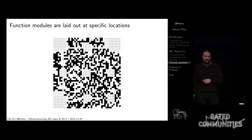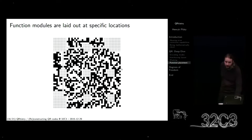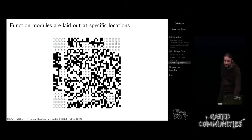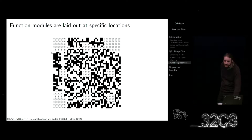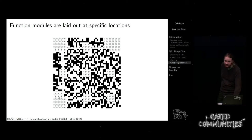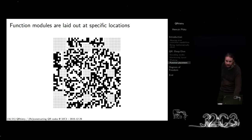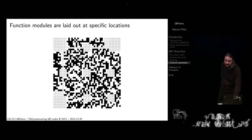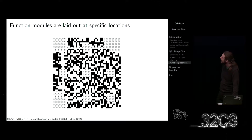This is another debug output from my program that tells you where the function modules are. We already saw the finder patterns in the corners. Right next to them is the format information — those are the Fs. There's a second copy down here and over here, so even if you cut off one of the corners it will be okay. There's also version information here and here, so even if you cut off one of those corners it will still be okay. And those are the alignment patterns and the timing pattern.